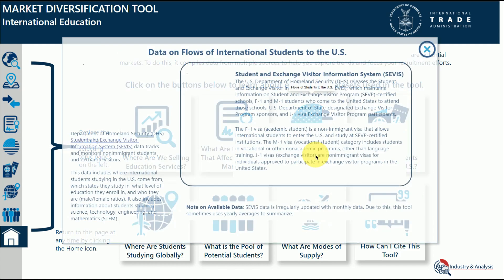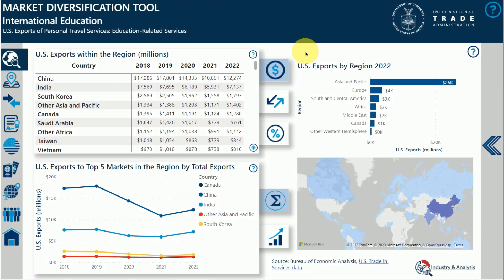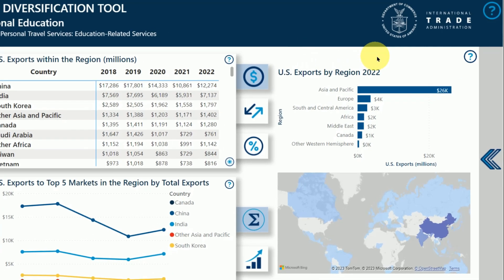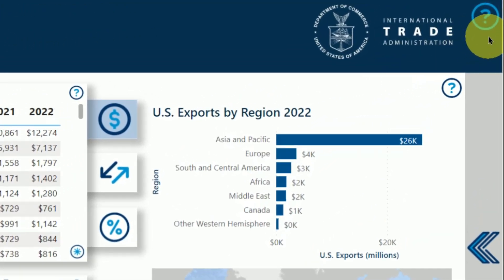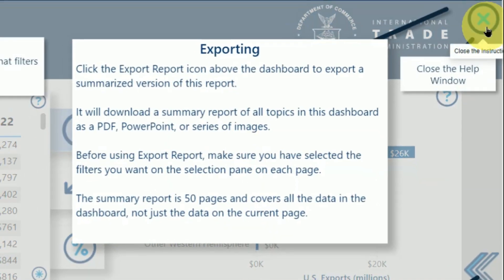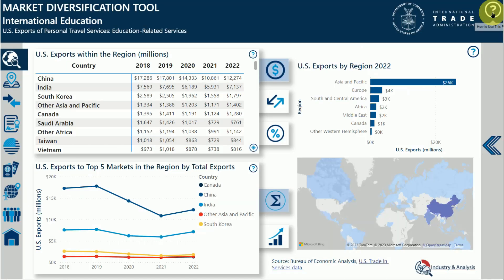If you click on one of the boxes, it will open a pop-up. Click the X in the corner to close it. Every page also has a pop-up guide to help you navigate. Just click the question mark in the top right of the dashboard — this will open a pop-up showing where things are located. Click the X button to close it again.